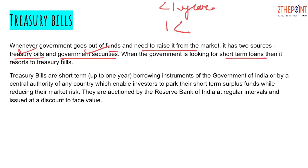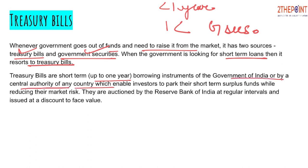When the government is looking for short-term loans, it resorts to Treasury Bills. When it needs funds for more than one year, it goes for Government Securities, which we call G-Secs. Treasury Bills are short-term — up to one year — borrowing instruments of the Government of India, and by the central authority of any country.